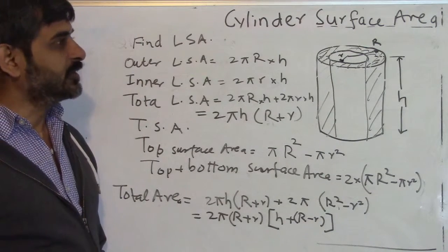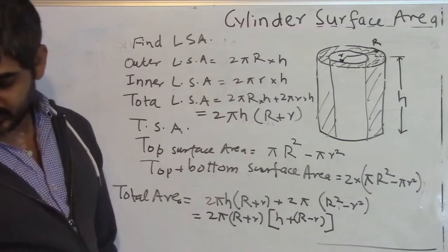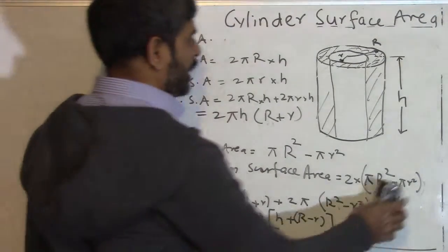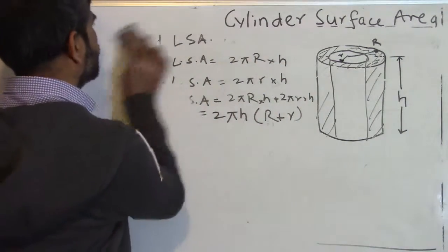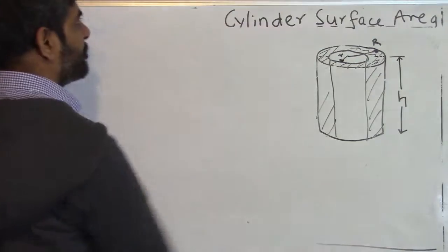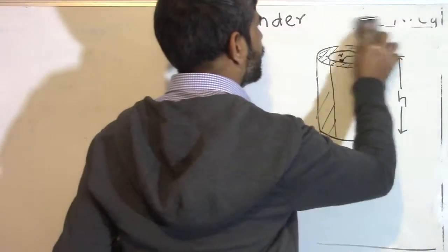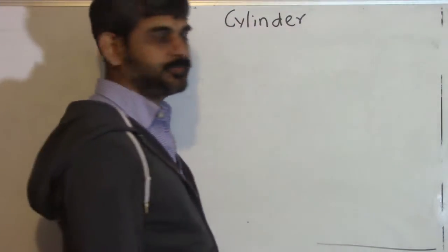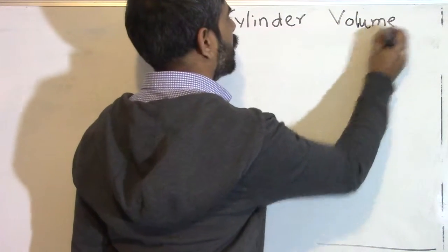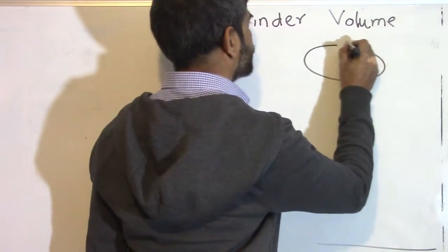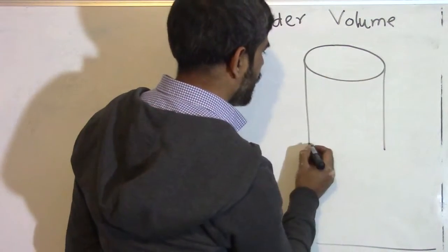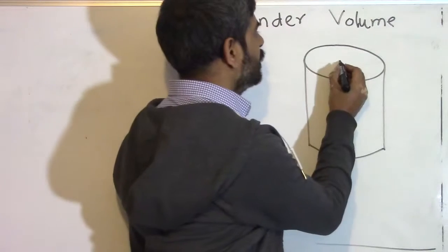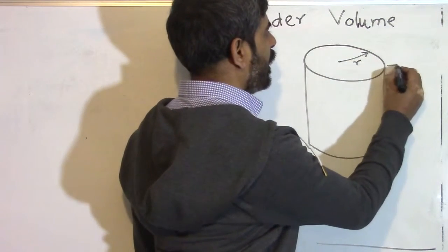We have covered the cylinder surface area. If you want, you can take a break, do the surface area questions, and come back and check the next section in the same lecture. We will now talk about the volume of the cylinder. Again, draw an ellipse, draw two straight lines and a half circle, and you have a cylinder with radius r and height h.